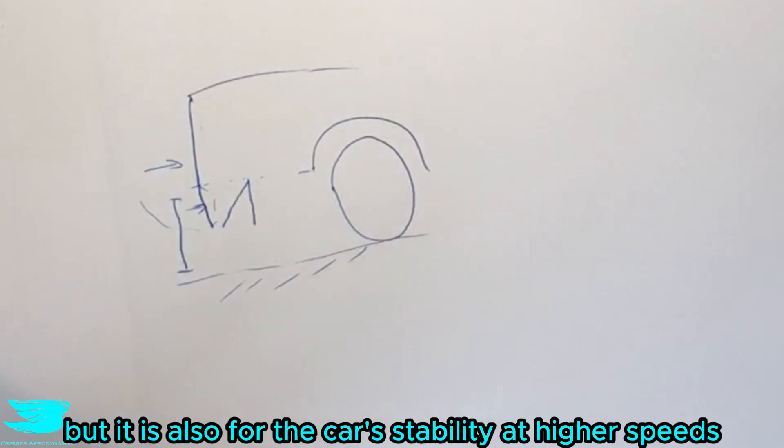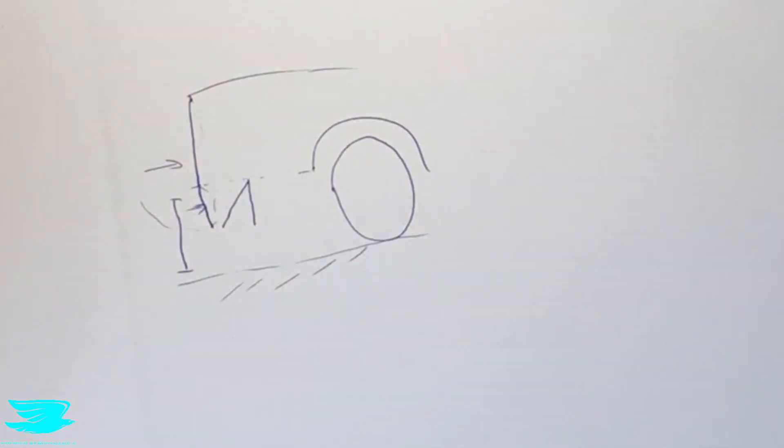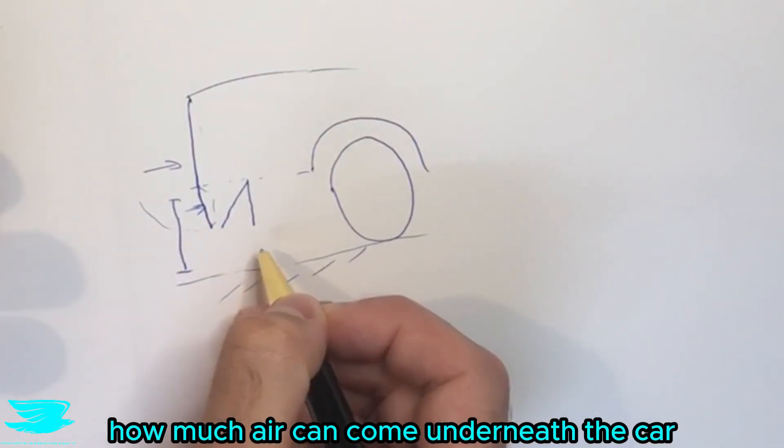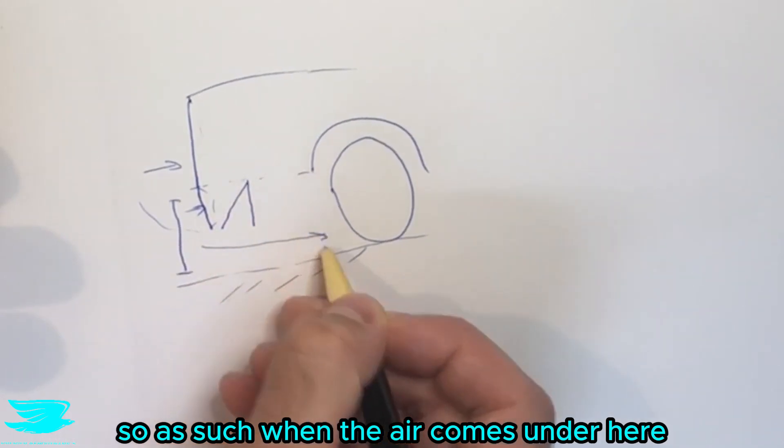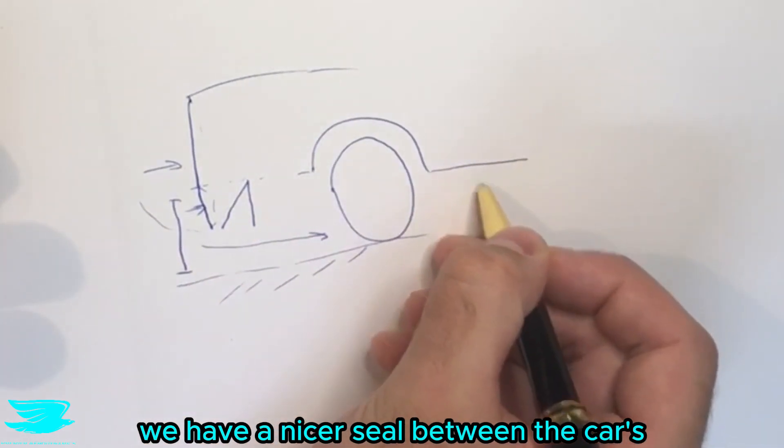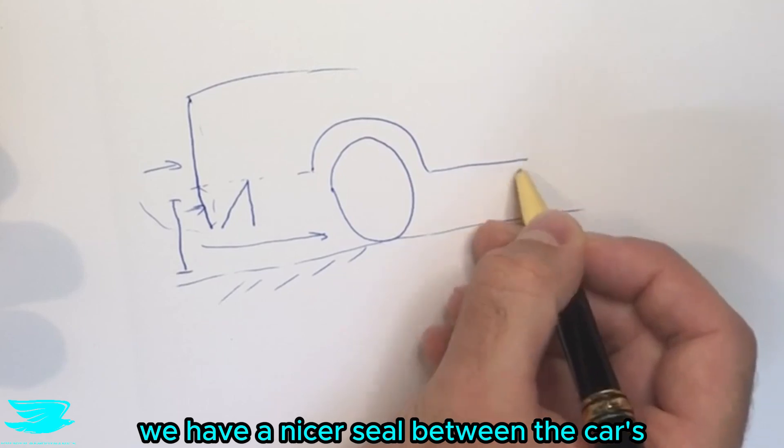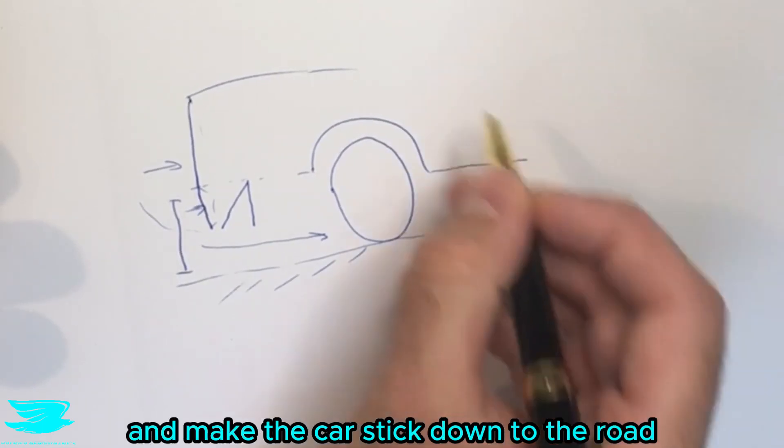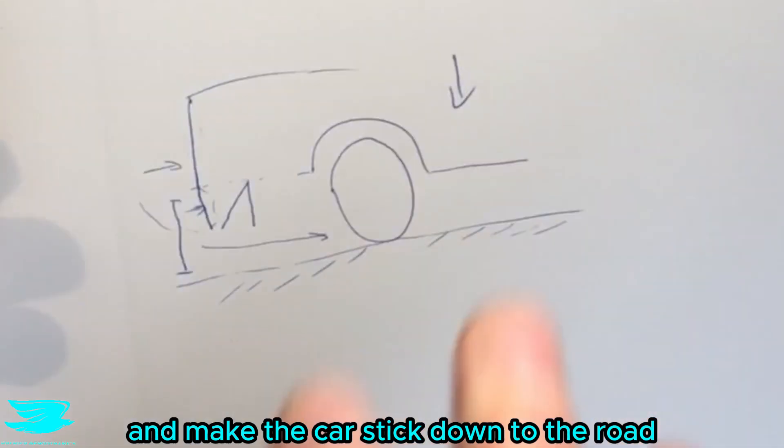Generally speaking yes it is increasing drag but it is also for the car's stability at higher speeds. So what happens is we are limiting how much air can come underneath the car. As such when the air comes under here we have a nicer seal between the car's underbody and the road and that way we can drop the pressure and make the car stick down to the road.